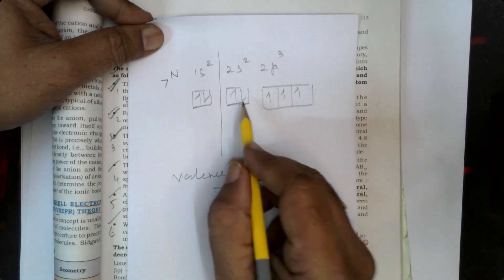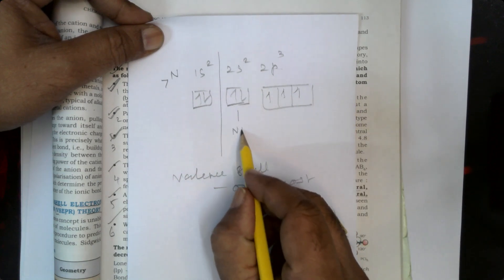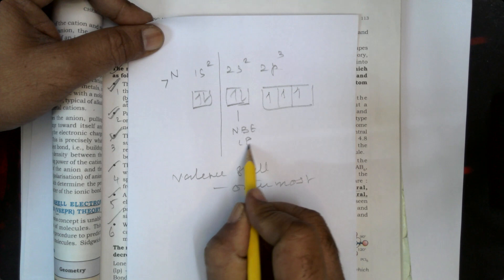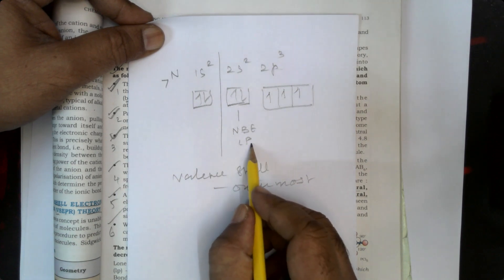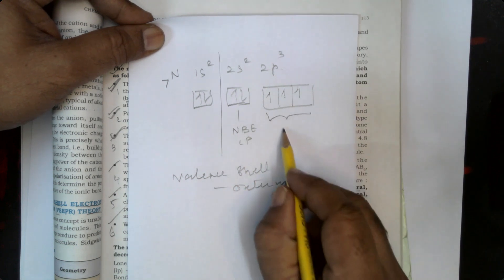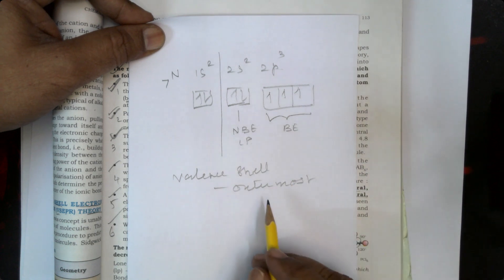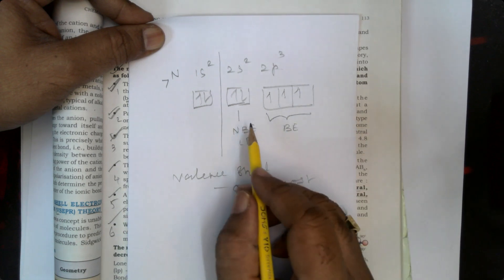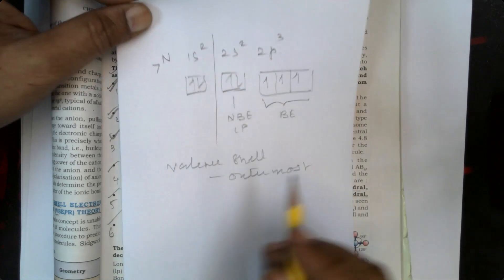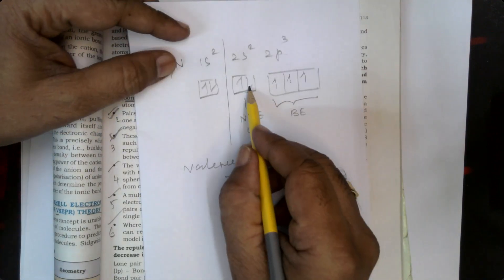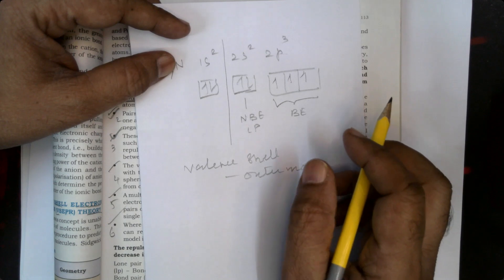The paired electrons in 2s are called a non-bonding electron pair, also called a lone pair — LP. So LP means lone pair of electrons, which are non-bonding electrons. The singly occupied 2p electrons are called bonding electrons. So there are both non-bonding and bonded electrons.